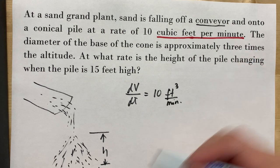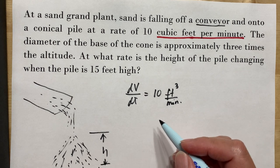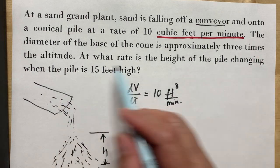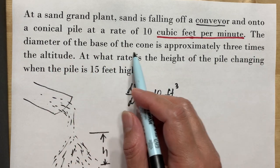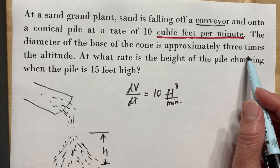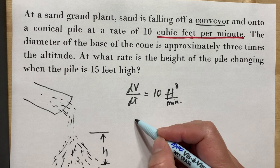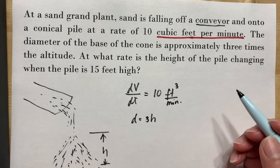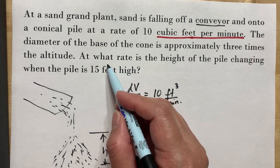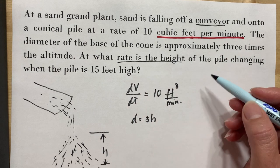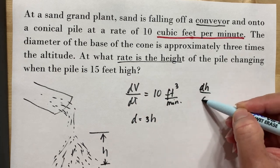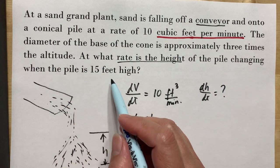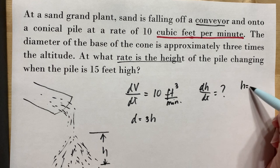Per minute, the volume of the sand increases by 10. Also, the diameter of the base of the cone is approximately three times the altitude, meaning diameter equals three times the height. What we need is dH/dt — the rate of change of height — when the pile is 15 feet high.